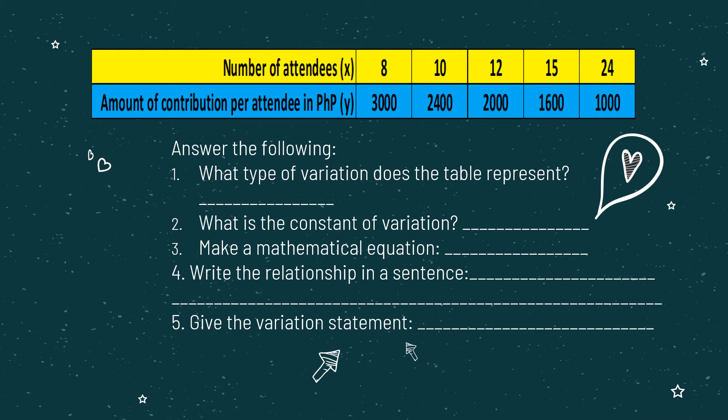We can observe this clearly: when there were 8 attendees, the contribution was 3,000 pesos. When it became 10 attendees, it dropped by 600 to 2,400. As the number of attendees increased to 12, the amount became 2,000. For 15 attendees, it became 1,600. So as the number of attendees increases, the amount of contribution decreases. This type of variation is called inverse variation.